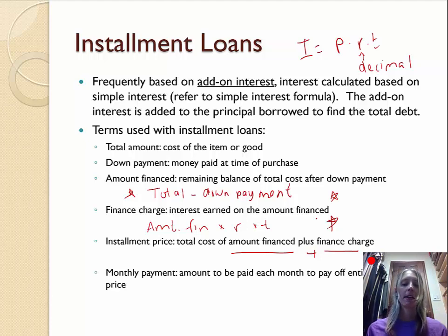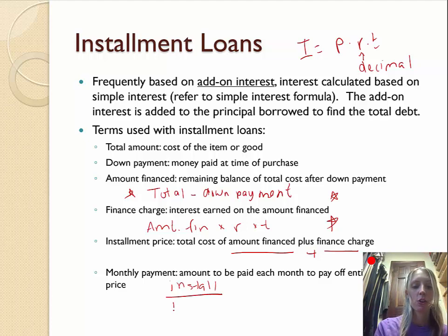Then the monthly payment, the amount that you agree to pay off every month, will be the installment price divided by 12 times the time agreed upon. So the number of years you agreed to pay this back. Let's look at some examples.